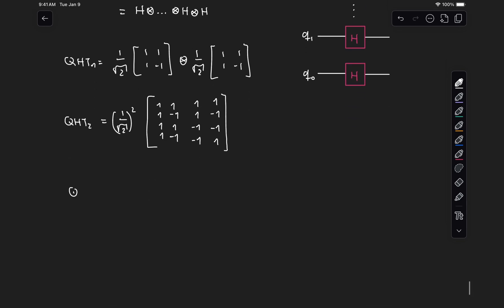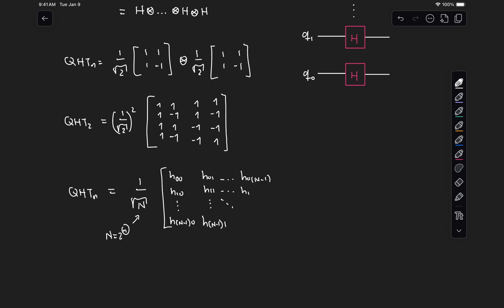In general, for n qubits, what we have is a matrix of the form 1 over the square root of capital N, where N is 2 to the lowercase n, and lowercase n is the total number of qubits, times a matrix with coefficients that can be calculated with the following expression. The coefficient h for the i-th row and the j-th column is given by minus 1 to the power of i dot product with j.